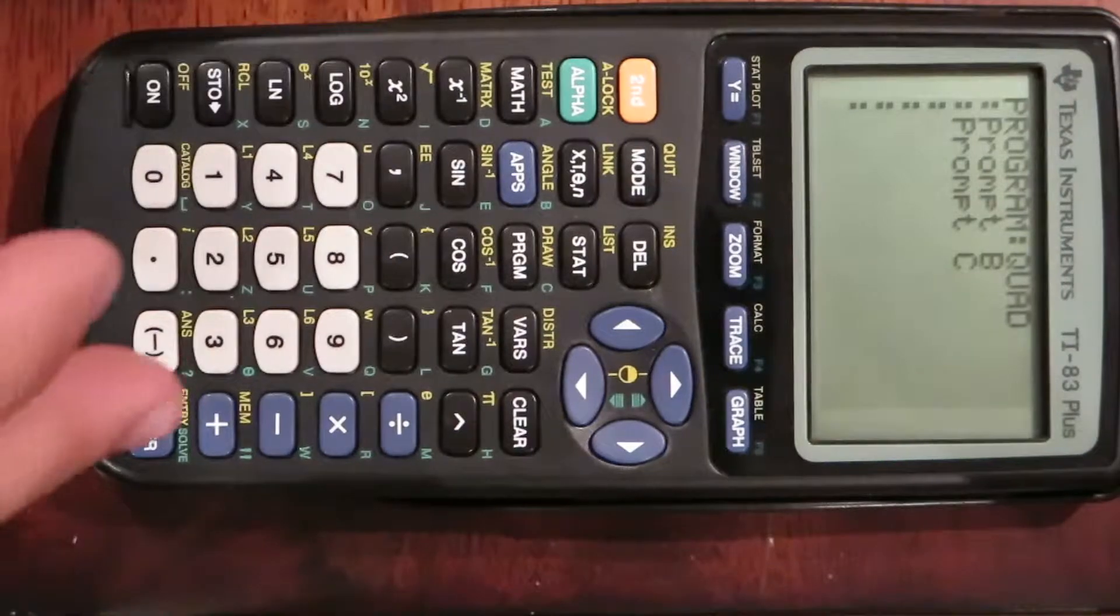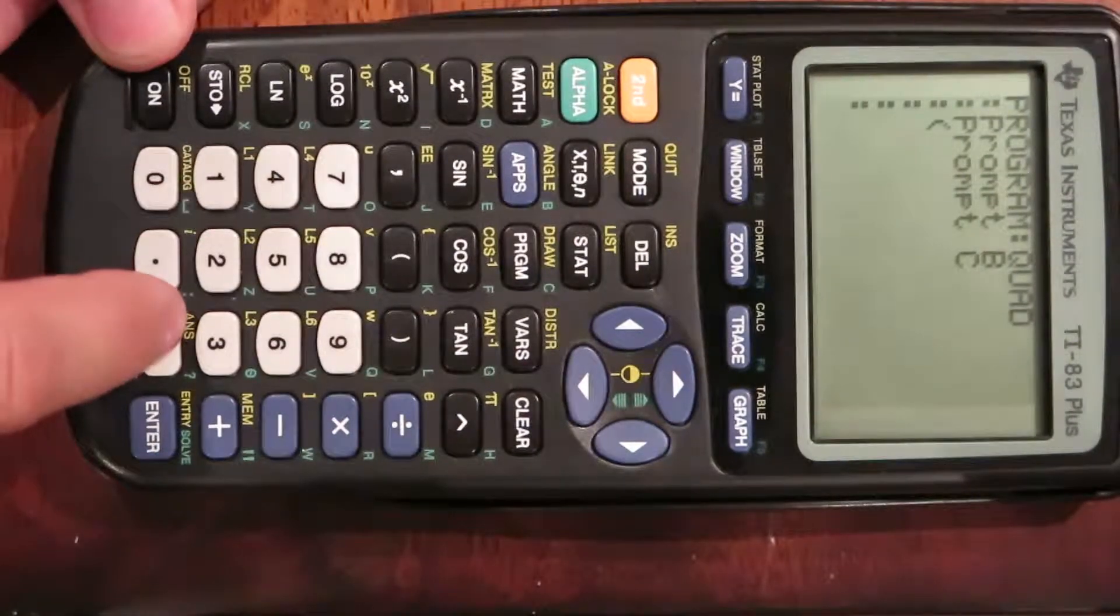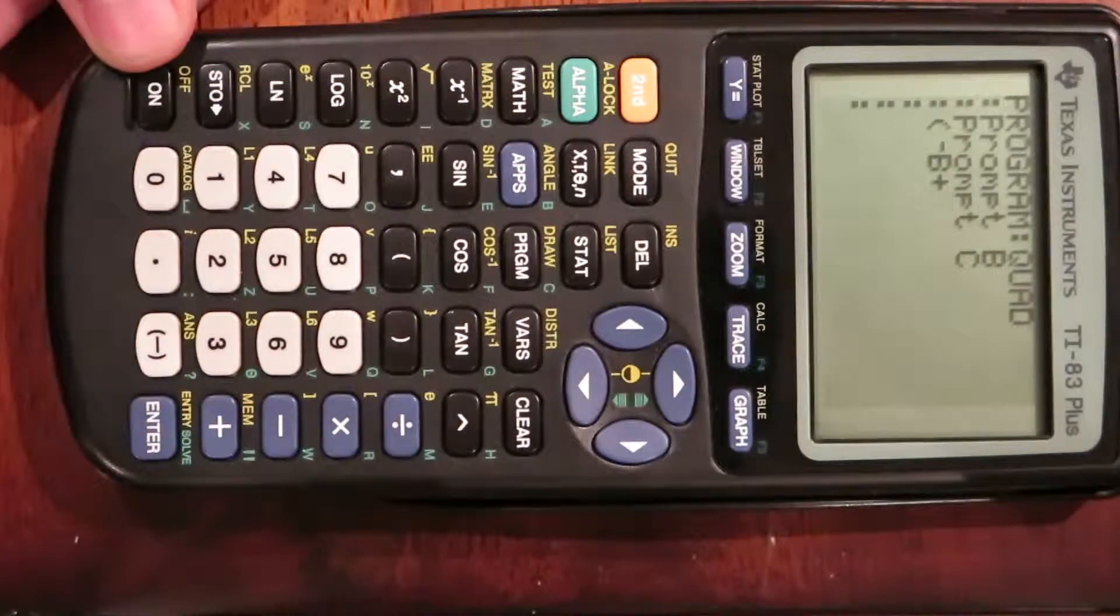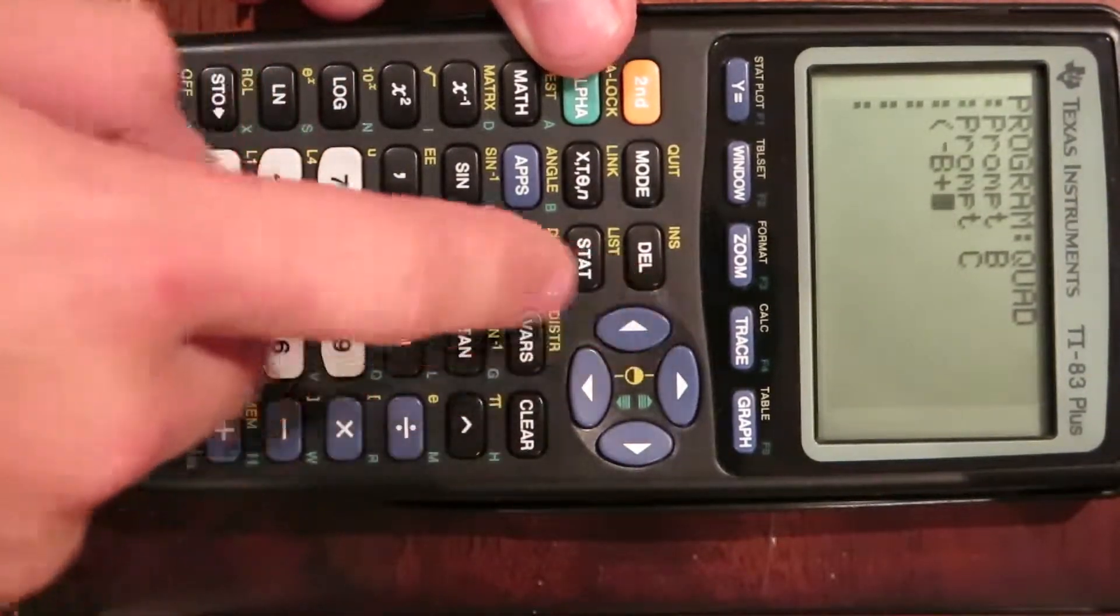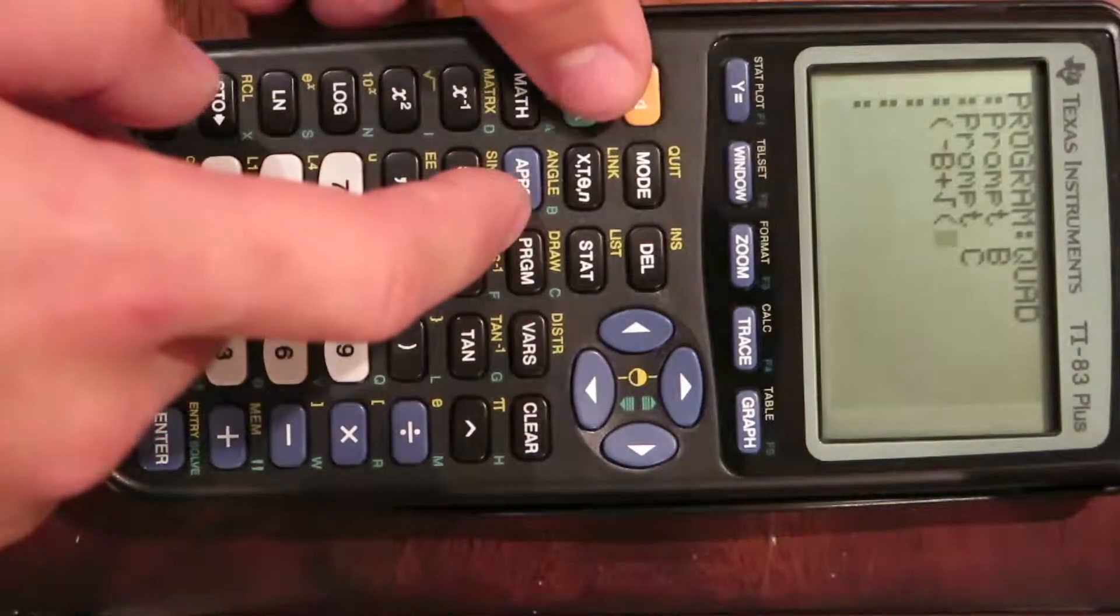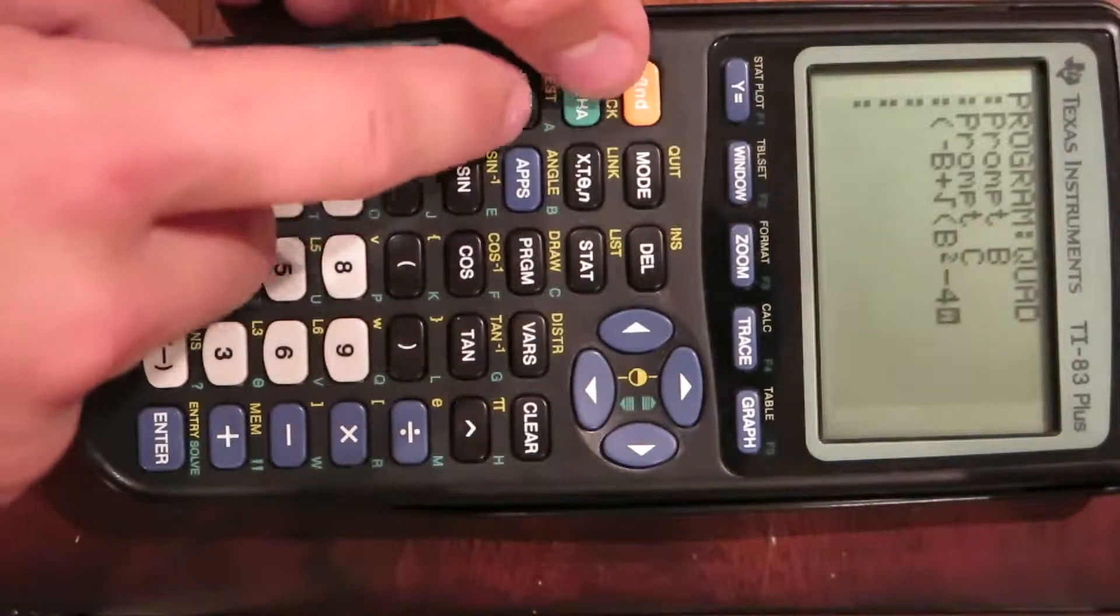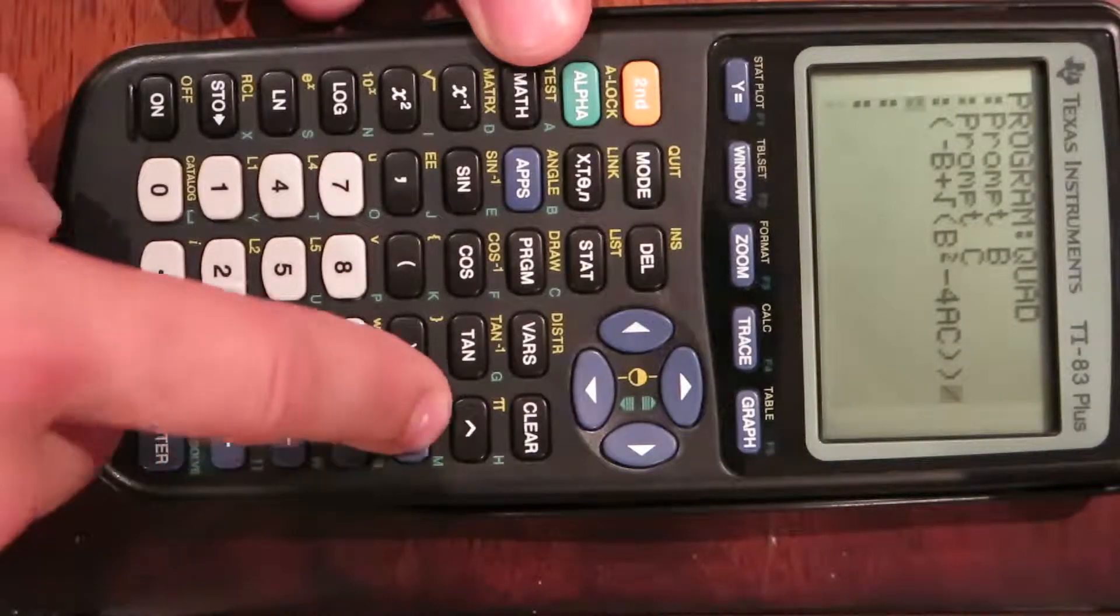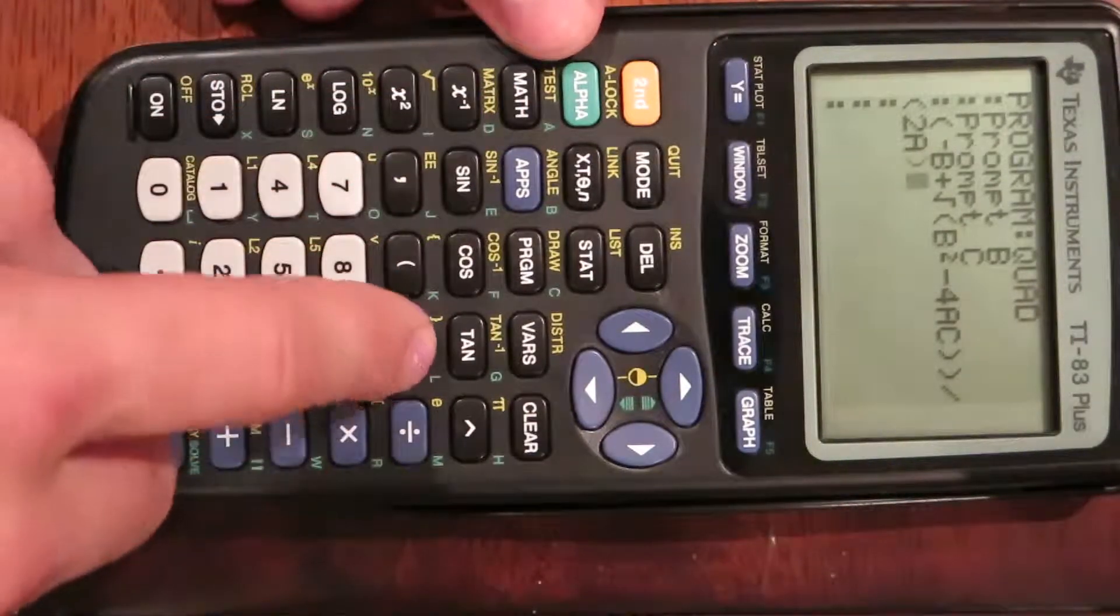After we have our C variable in, we're going to start typing in the quadratic formula: parentheses, negative B, plus the square root of B squared minus 4AC, close parentheses, divided by parentheses 2A, close parentheses.